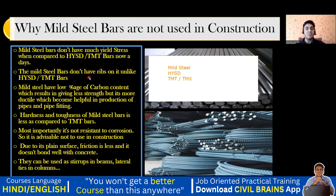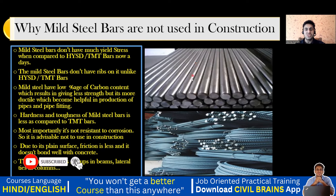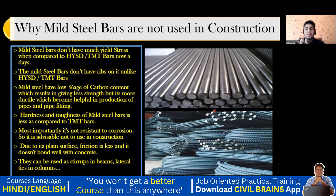Mild steel bars don't have ribs on them, unlike HYSD or TMT bars. As you can see in the image, mild steel bars are very plain — plain rebar. Whereas nowadays if you look at TMT, TMX, or HYSD rebar, you can see a lot of ribs. Earlier in mild steel this was not there, and if there are no ribs, there won't be good bonding with the concrete.